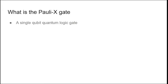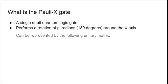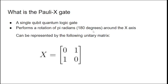So what is the Pauli-X gate? It's just a single qubit quantum logic gate — it's probably one of the simplest quantum logic gates besides maybe the identity gate. It performs a rotation of pi radians, or 180 degrees, around the x-axis, and it can be represented using the following unitary matrix. This is just a simple two-by-two matrix: zero, one, one, zero — and you'll see why this matrix is very important.